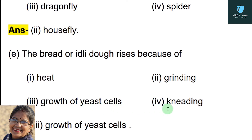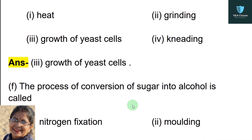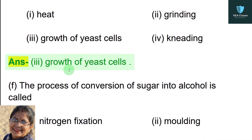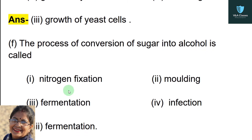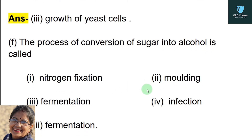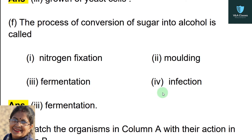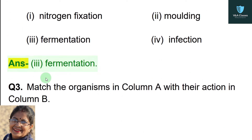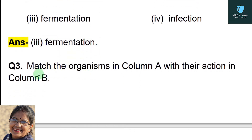Next question: the bread or idli rises because of — first option heat, second option grinding, third option growth of yeast cells, fourth option kneading. Correct option is growth of yeast cells. Next question: the process of conversion of sugar into alcohol is called — correct option is fermentation.